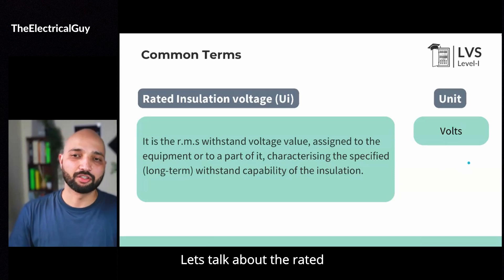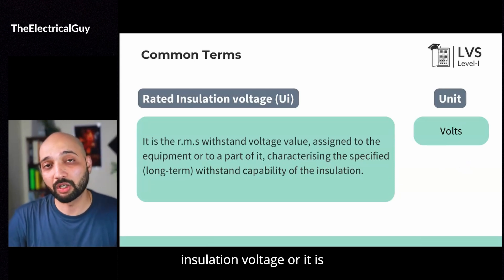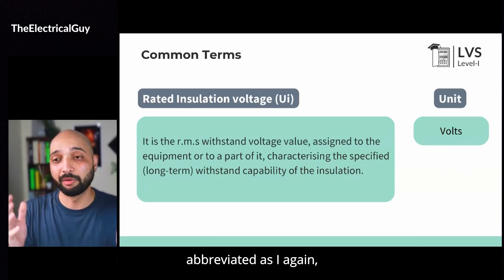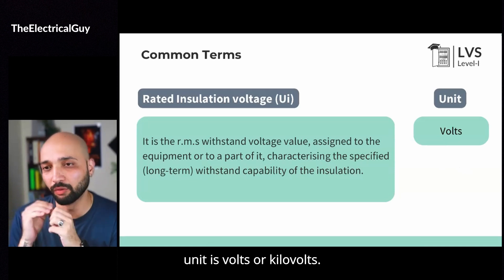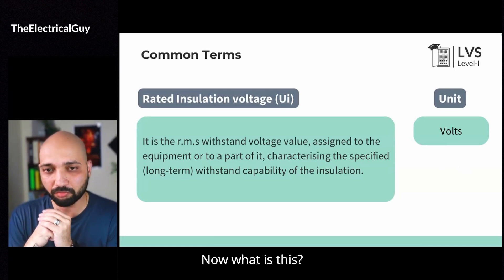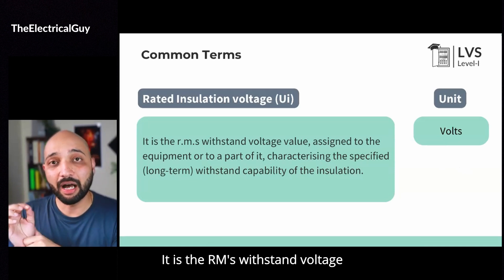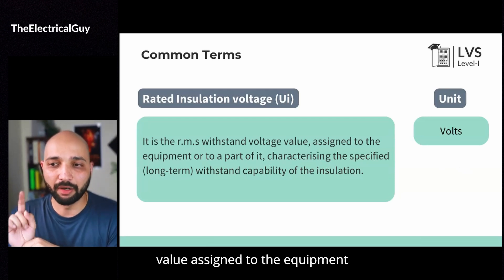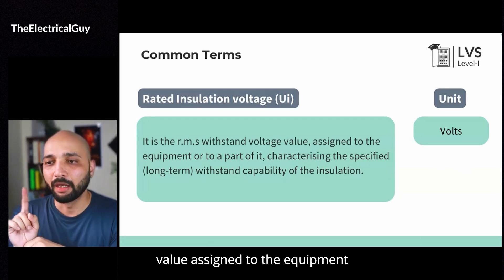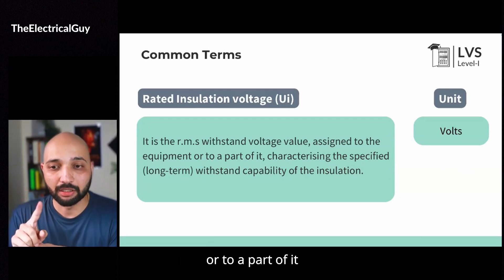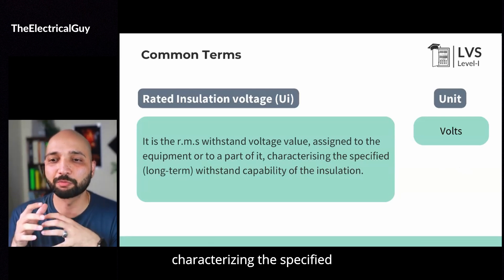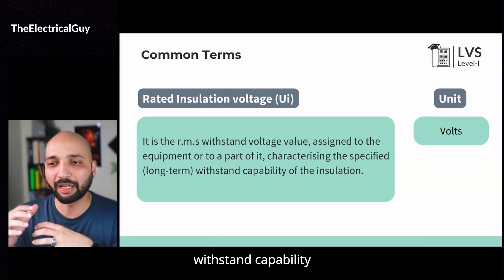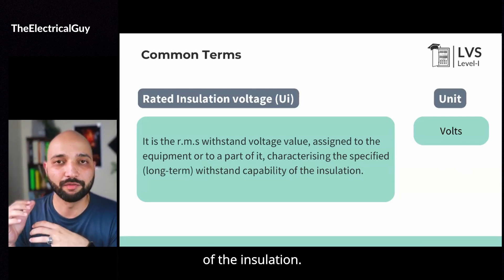Moving on, let's talk about the rated insulation voltage, or it is abbreviated as Ui. The unit is volts or kilovolts. It is the RMS withstand voltage value assigned to the equipment or to a part of it, characterizing the specified withstand capability of the insulation.